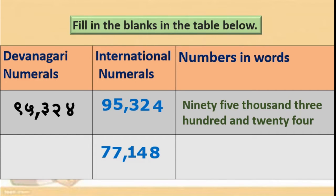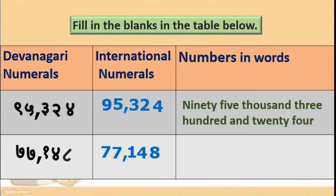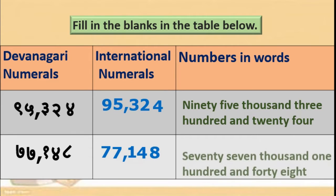Okay, in the second one, international numerals are given. Now we have to write the Devanagari numerals and the number in words. First we will write the same number in Devanagari numerals: 7, 7, 1, 4, 8 — that means 77,148. Okay, and that we will write in words.